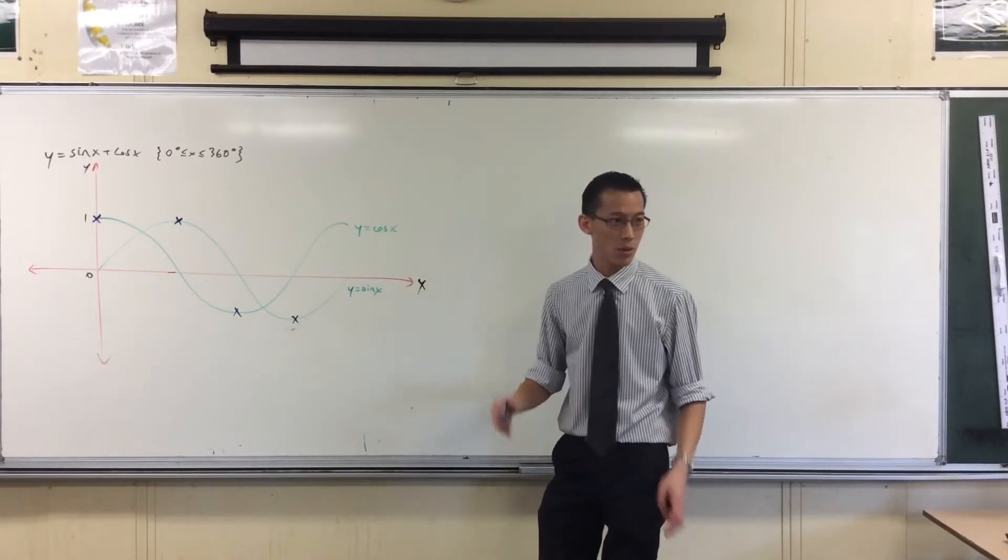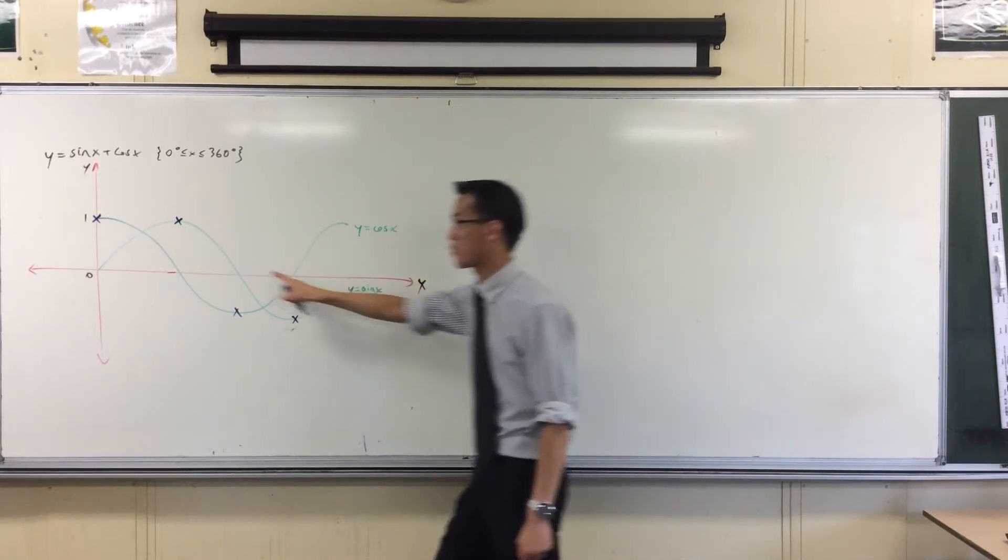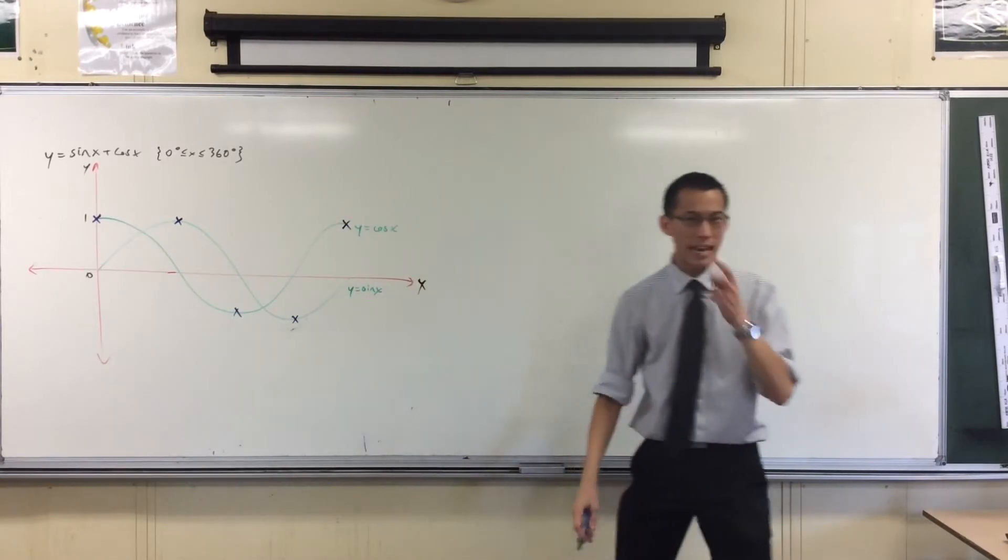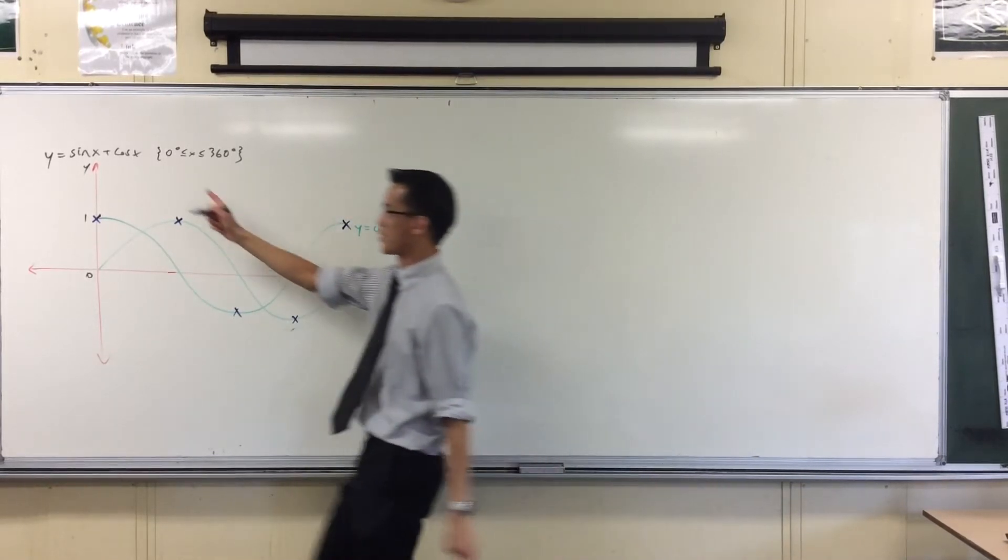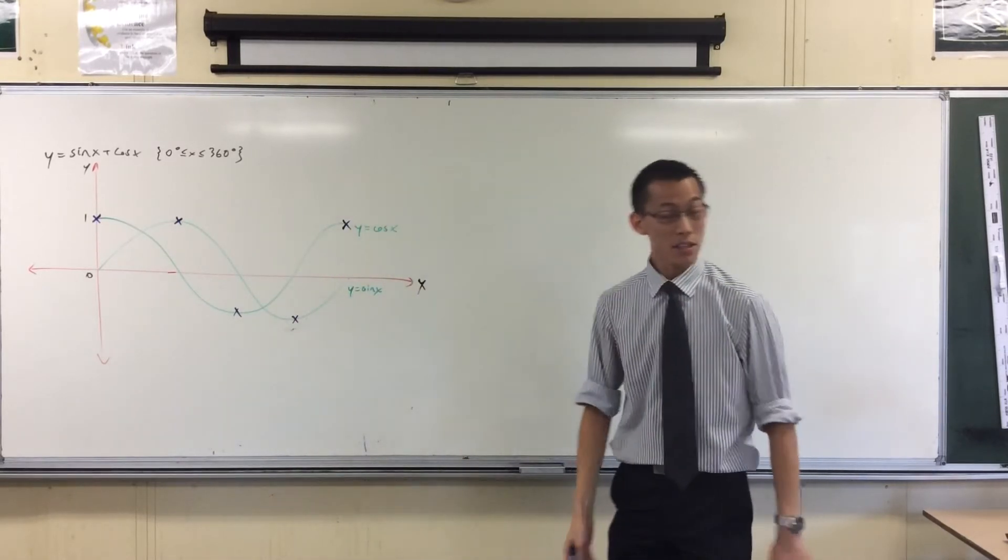And the last one which we can take through an intercept is right there at 360 degrees. I'm back where I started, which is exactly what I should expect. So whatever my sum of these graphs is going to be, it's going to pass through all these blue points. But there's a few others I can put on there as well.